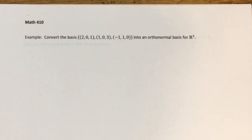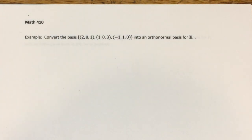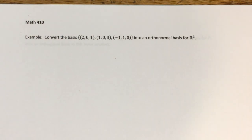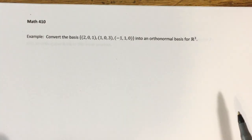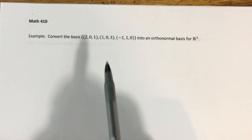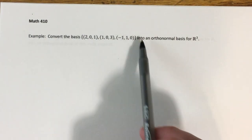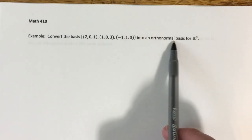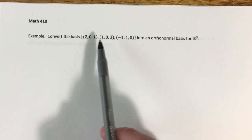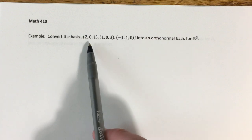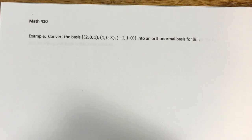What we're going to do now is try out the Gram-Schmidt process that we just talked about on a basis for R3. We're given a basis for R3 — we're told that it's a basis, we don't need to verify it, but we do in fact need this to be a basis for the Gram-Schmidt process to work. We want to do the full thing where we turn this into an orthonormal basis, which means once we get it in the form of an orthogonal basis, we will normalize all of the vectors that we get as a final step.